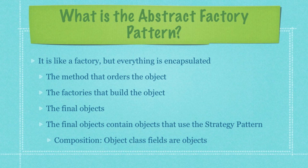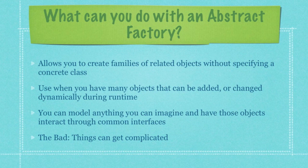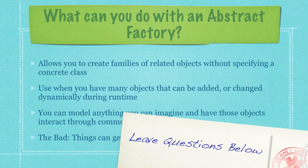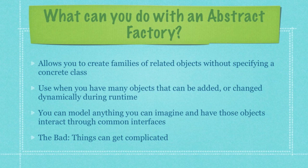The strategy pattern uses what is called composition — in other words, its class fields are actually objects themselves. What can you do with an abstract factory? It allows you to create families of related objects without specifying a concrete class, which provides a ton of flexibility. You want to use them whenever you want to have many objects that can be added or changed dynamically during runtime, and you can model anything you can imagine, with objects easily interacting through common interfaces. The only downside is it can get very complicated.